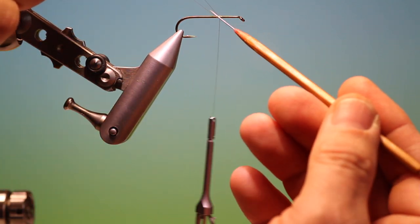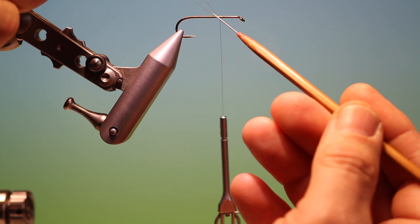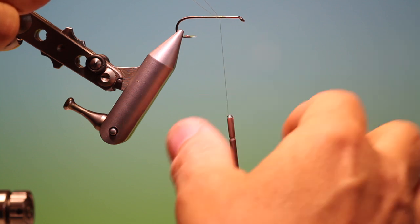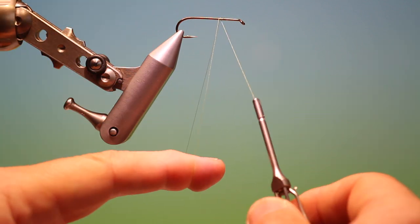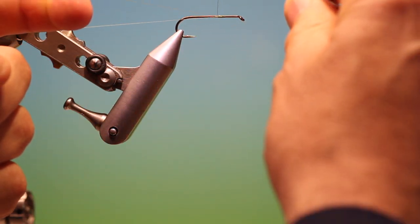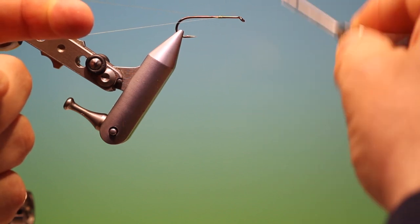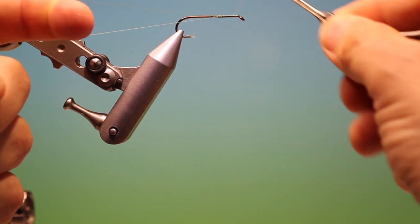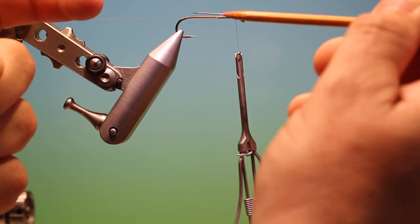But if you see here, the loop is open. We don't want this—it has to be closed, otherwise your materials will fall out. So we place our bobbin over the dubbing loop once like that, then we lock it off again and go forward. Now you can see that it's closed at the top.